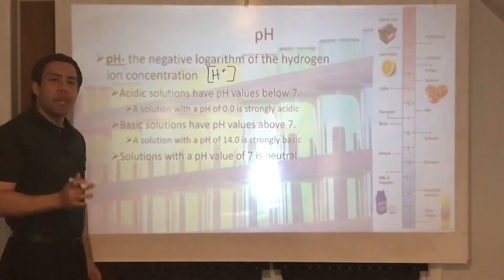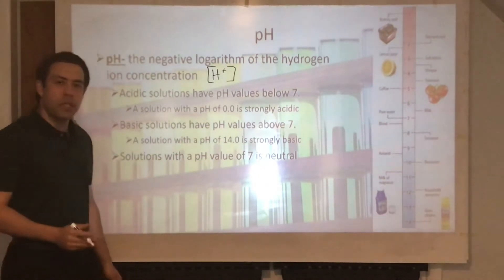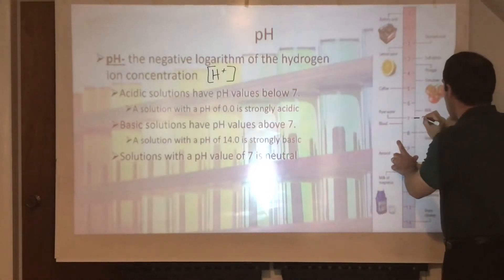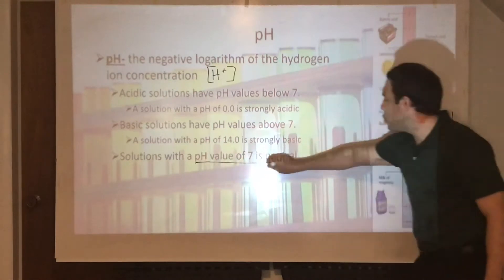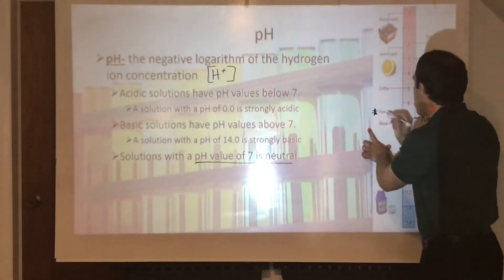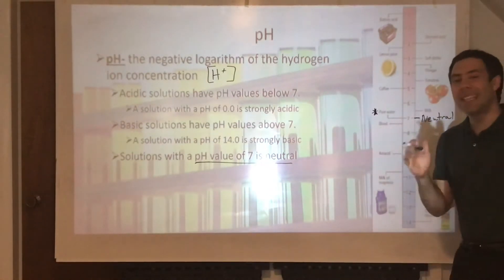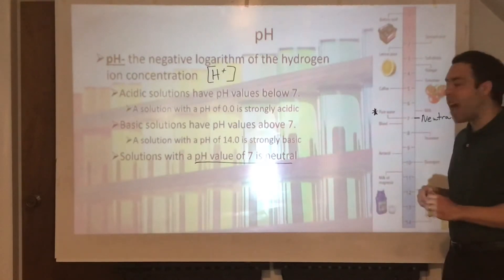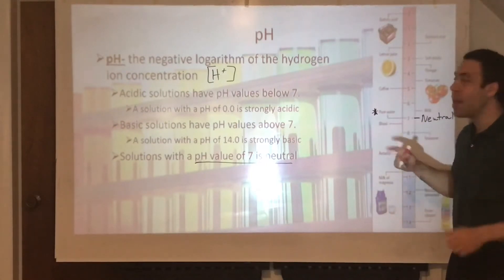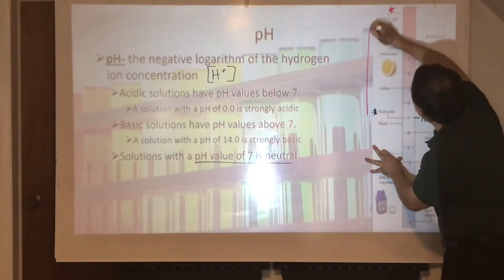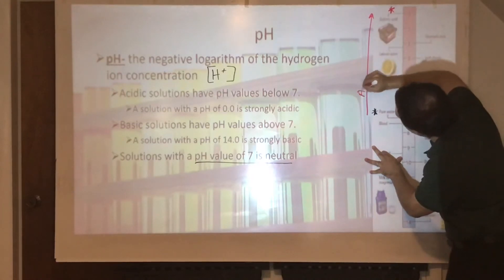You might remember the pH scale being from 1 to 14. In the middle, we have a pH of 7, which is considered neutral. One example of a neutral substance is pure water — it is neither acidic nor basic. If you go below 7 — 6, 5, 4, 3, 2, 1, even to 0 — as you go lower, the substances become more acidic.